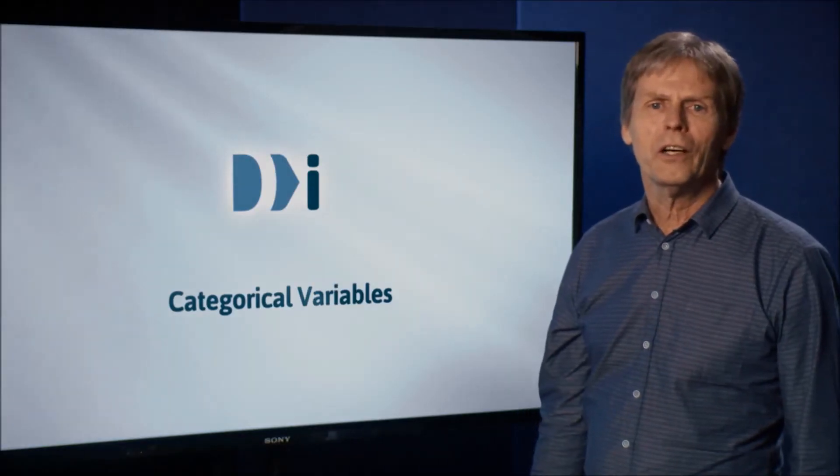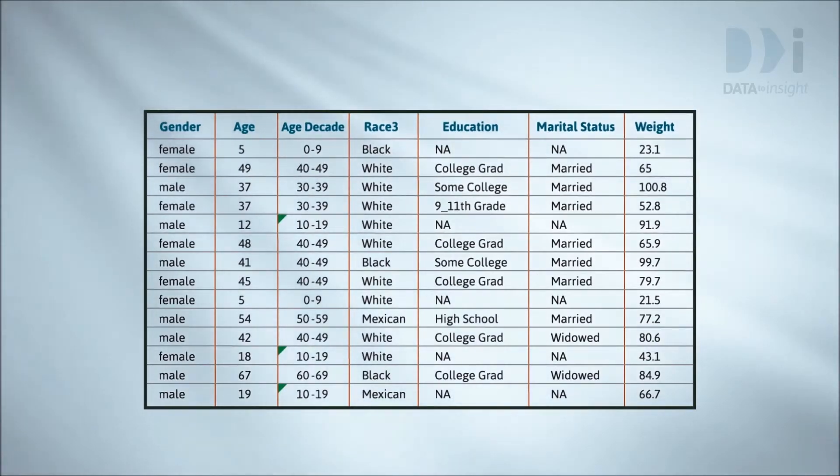Welcome, today we're going to look at data on a categorical variable. This is a small part of our NHANES data set. The full data has 10,000 people and over 70 variables.